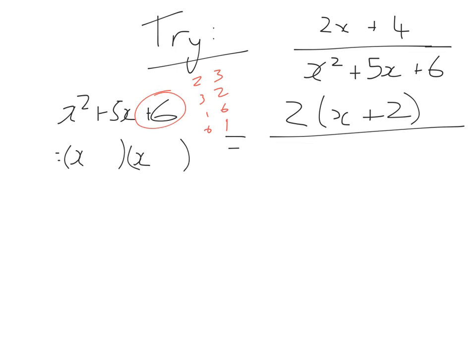And then we say to ourselves, which out of those numbers up on the right-hand side in red will add together to give me 5x? And look, we've got a choice of two of them. We can put a 2 here and a 3 here. And they're both going to be pluses because it's a plus 6x, or sorry, a plus 6 and a plus 5x.